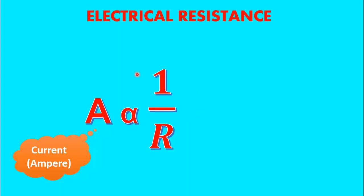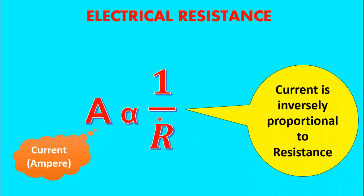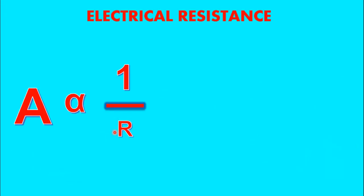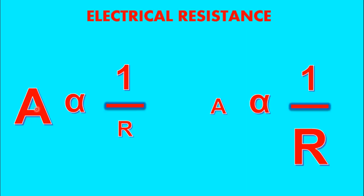Let's talk about the relation between current and resistance. I am using A to represent current — A stands for ampere, which is the unit of current — while R represents electrical resistance. You can see that both quantities are inversely proportional to each other, meaning that as resistance in the circuit decreases, the current increases, and vice versa.